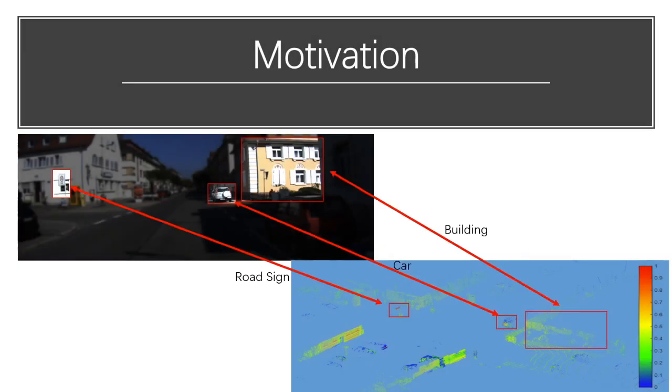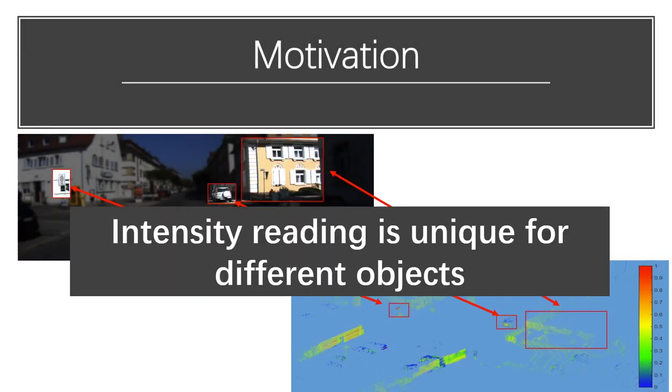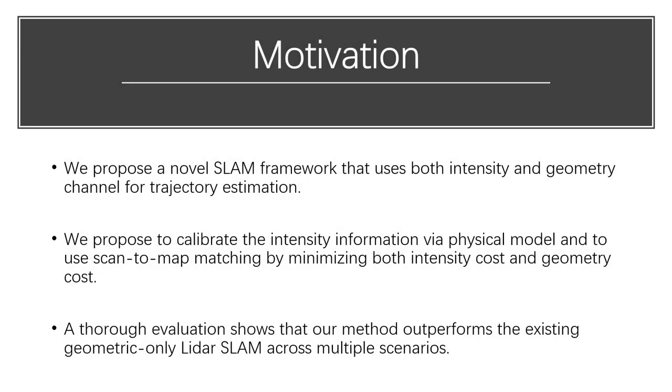Simultaneous localization and mapping is the task of estimating a robot's trajectory and reconstructing the environment based on observations from active sensors such as light detection and ranging. It is widely used in various robotics applications such as autonomous driving, drone delivery, etc.